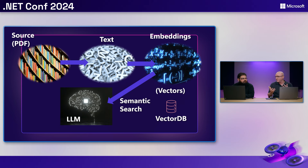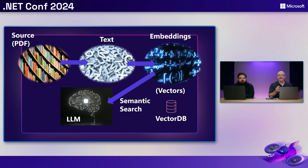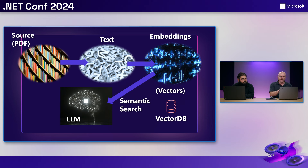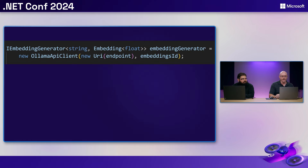In our case we have PDF documents — one PDF per product, basically the manual. We extract the text and then turn it into what I call the matrix: numerical-based vectors that the language model and vector database know how to work with, so they can determine relationships between texts. Once we have that, we store it in a vector database — a database optimized to very rapidly perform queries against vectorized data — then pass it to the large language model.